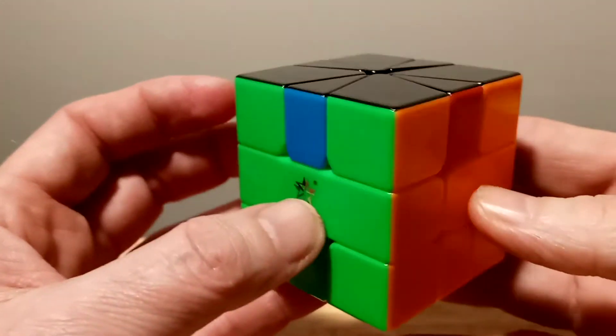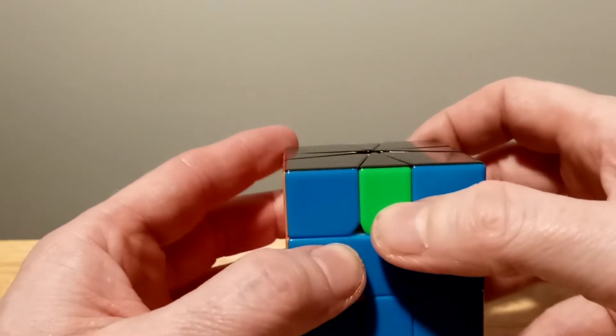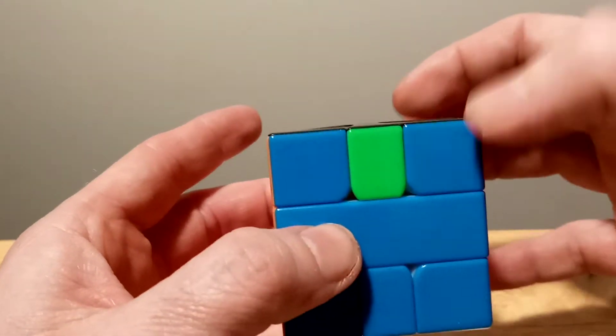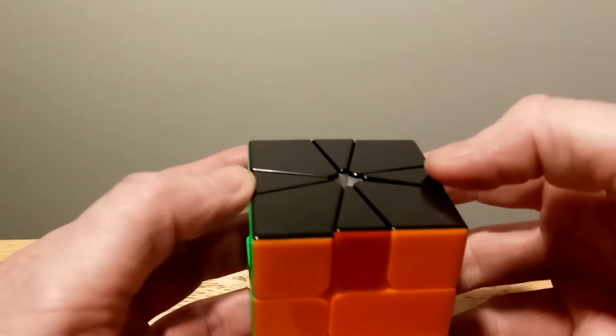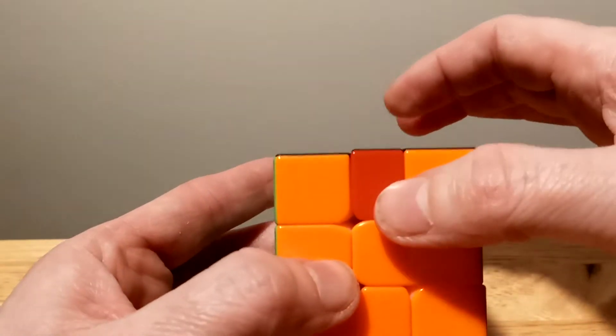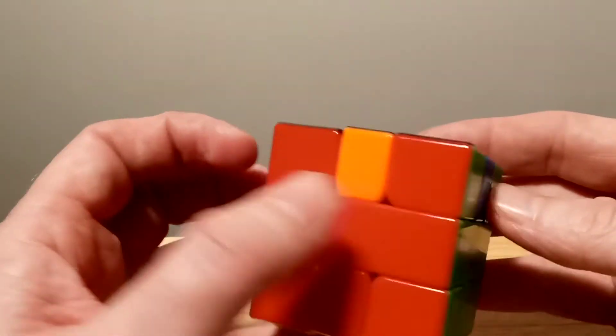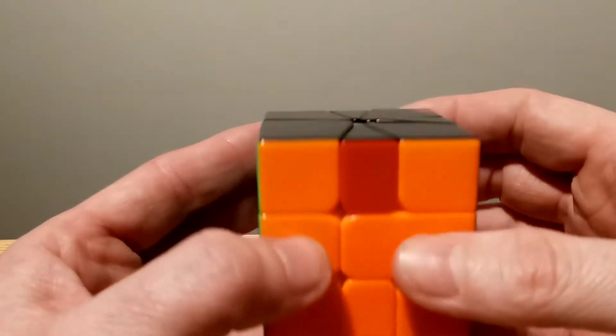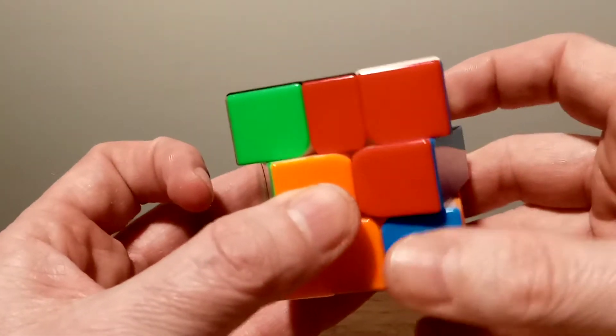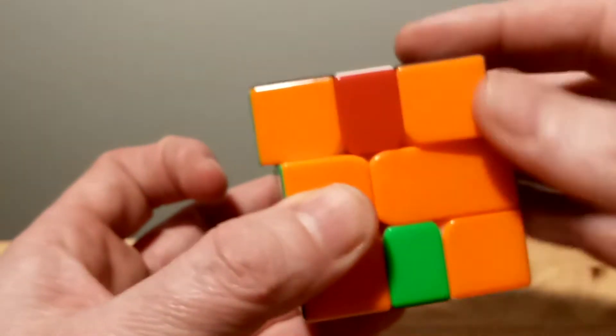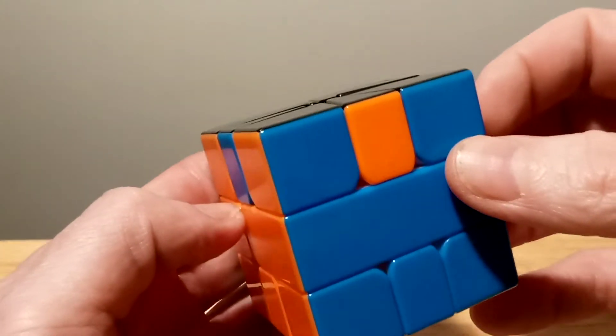Now see what happened? It turned into the H-perm, where the H-perm is where the green goes on this side and the blue goes over here. These two sides switch, and then these two sides switch, because the orange is on this side, the red's on this side. So the edges switch. See what happened, we did the move, and see it turns back to the Z-perm.